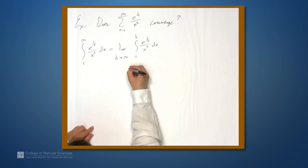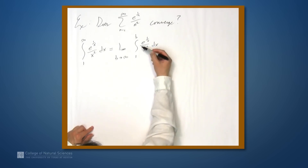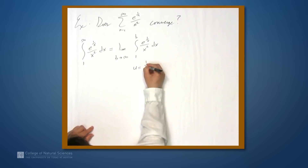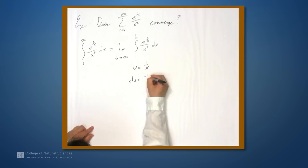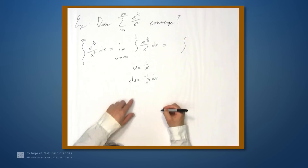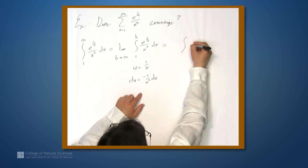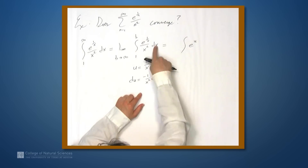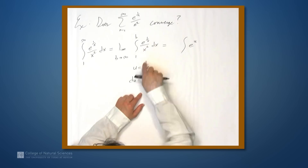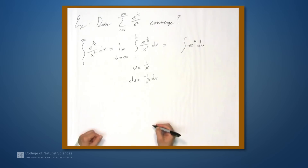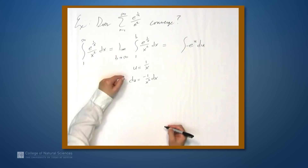Let's do a u-substitution. We have a good candidate in 1 over x, because 1 over x squared is essentially the derivative of 1 over x. So let u equal 1 over x. Then du equals negative 1 over x squared dx, which means 1 over x squared dx equals negative du. So we can write the integrand as negative e to the u du.